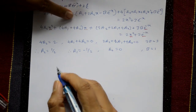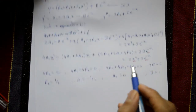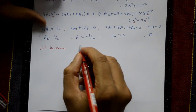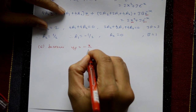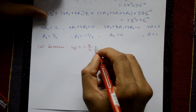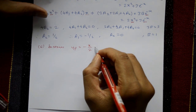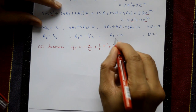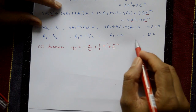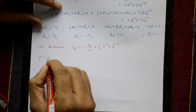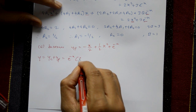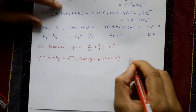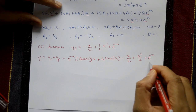With a₀ = 0, a₁ = -1/2, a₂ = 1/2, and B = 1, the particular integral is yp = -x/2 + x²/2 + e^(-x). The complete solution is: y = e^(-x)(c₁cos(√3 x) + c₂sin(√3 x)) - x/2 + x²/2 + e^(-x).